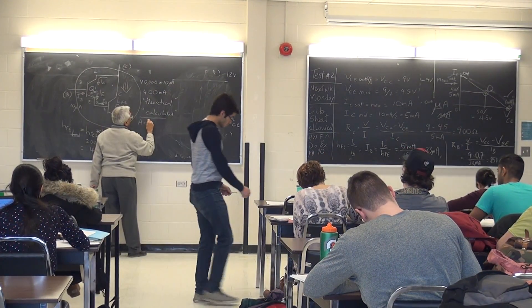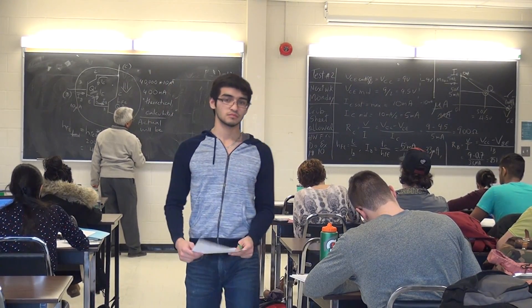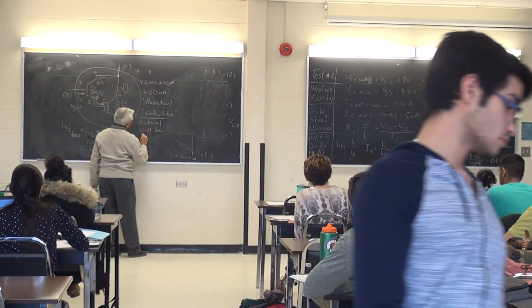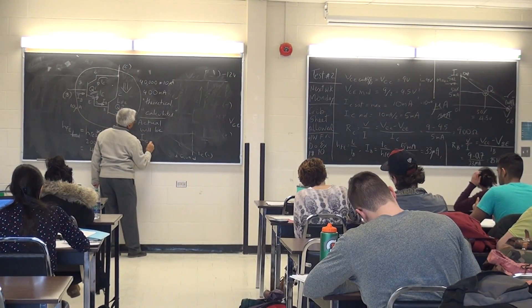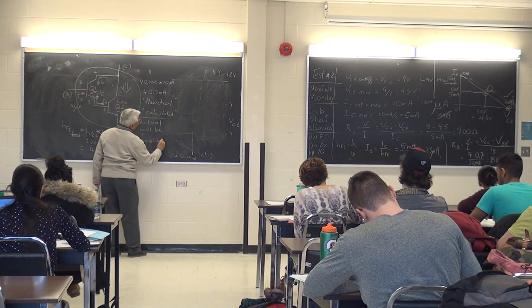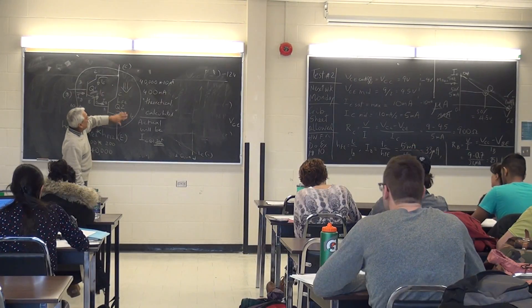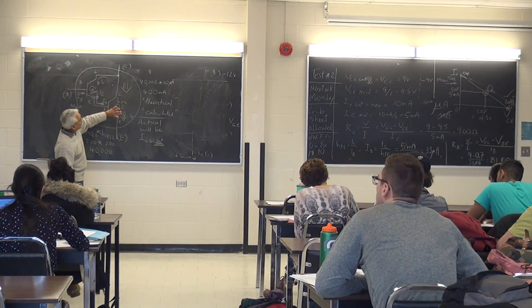Actual will be smaller, will be IC at Q2 saturated, saturated value. Okay? The actual current here will be when this transistor saturates.